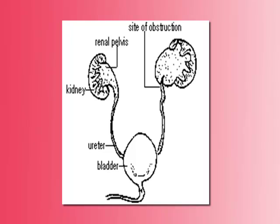Now we'll start talking about today's topic, which is hydronephrosis. Hydronephrosis is defined as the distension of the calyx and the renal pelvis, caused by obstruction of the ureteropelvic junction (UPJ), and it is a consequence of renal atrophy of the renal parenchyma.